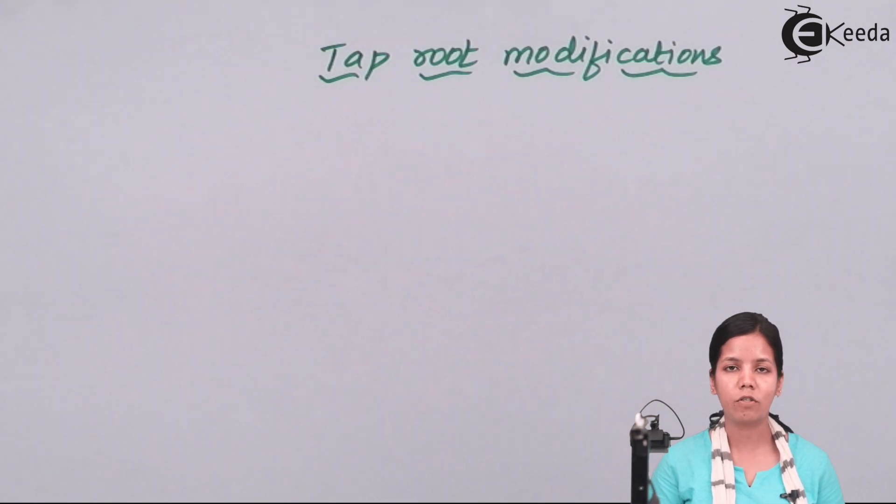Today we'll be studying tap root modifications. In certain plants, for example beetroot, carrot, radish - conical form, fusiform, and nappy form modifications are found in tap roots.